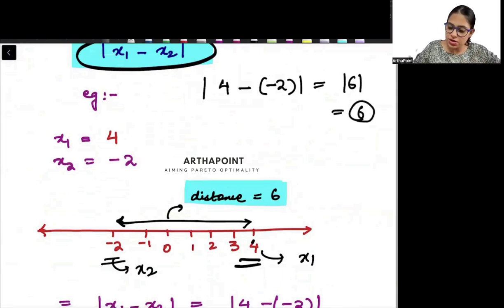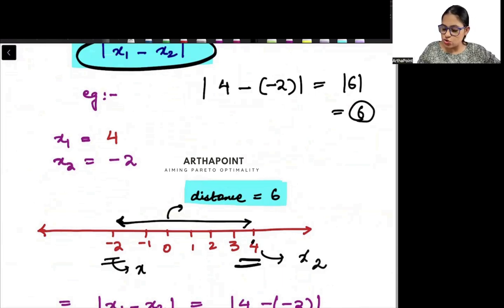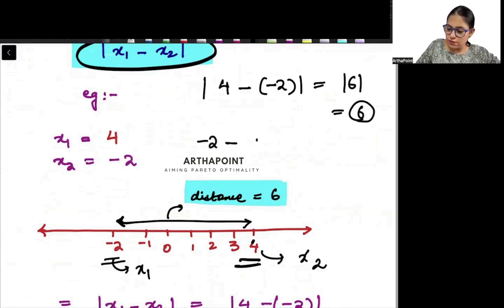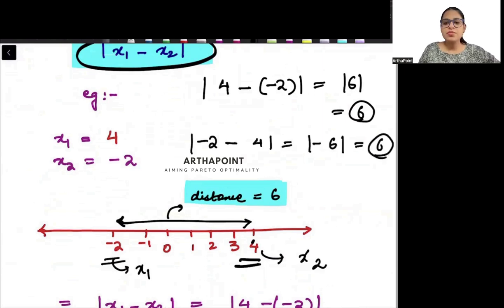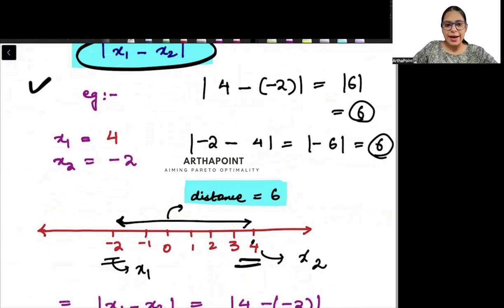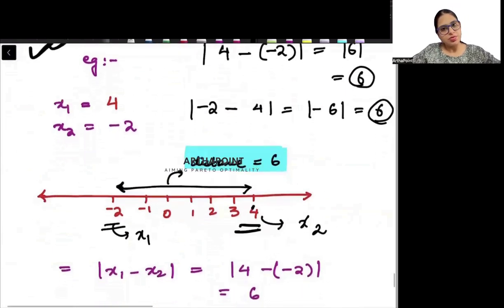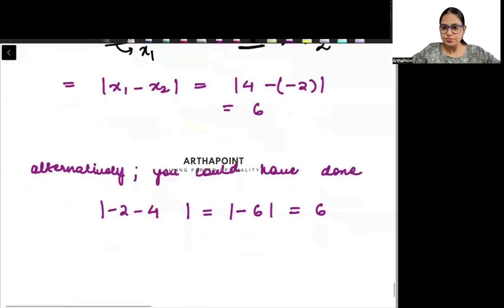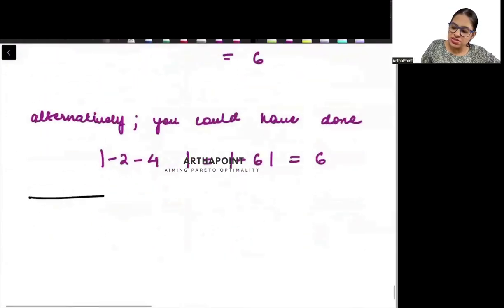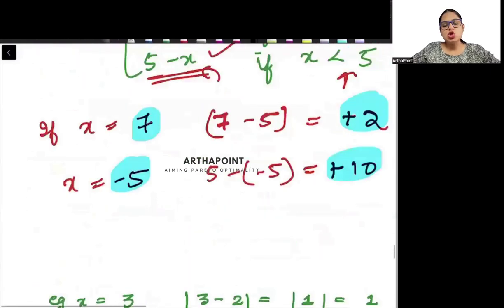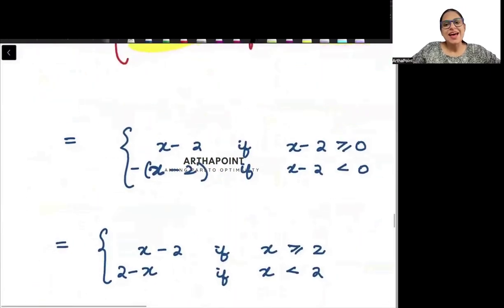Now suppose I want to find the distance between two numbers x1 and x2. Since distance is always positive, the distance is |x1 − x2|. For example, the distance between minus 2 and 4: taking x1 = 4 and x2 = minus 2, we get |4 − (minus 2)| = |6| = 6. Reversing also works: |minus 2 − 4| = |minus 6| = 6. So the distance between two numbers is the absolute value of their difference.